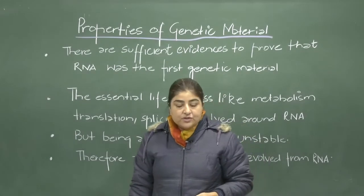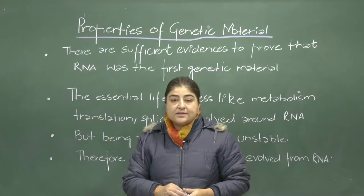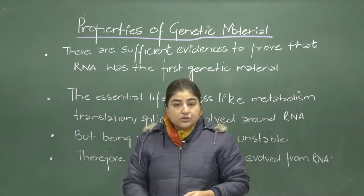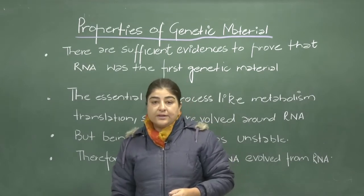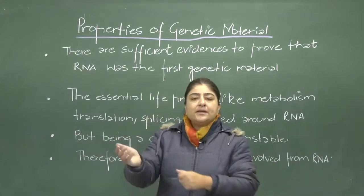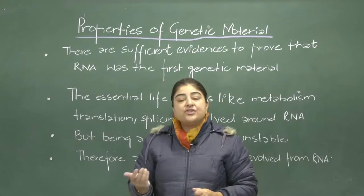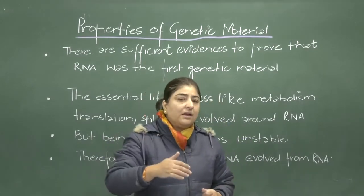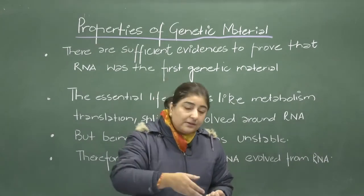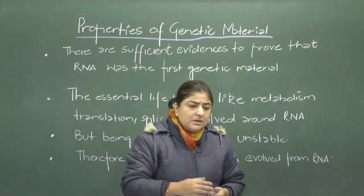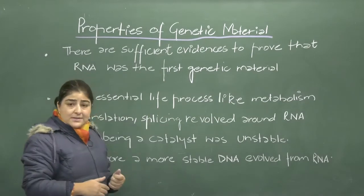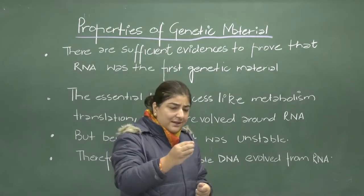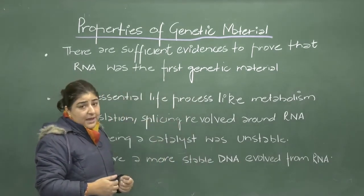Last time we saw that DNA acts as a hereditary material containing all hereditary information. Today we are going to discuss the properties of genetic material. When evolution took place, RNA was the first genetic material. We have ample evidence that RNA acted as the genetic material from the beginning when life evolved on Earth. Some important processes like metabolism, translation, and splicing all revolve around RNA, as RNA acts as a catalyst helping in these important life processes.